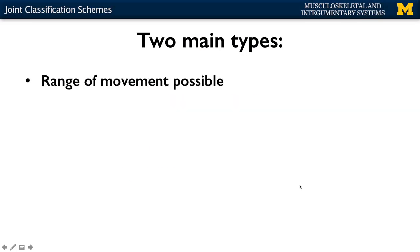Another way to think about the differences between joints is how much movement is allowed at the joint. There are three possibilities. The first is no movement whatsoever. You're going to find these in synchondroses, in epiphyseal plates, and in the sutures of the skull — no movement is allowed there, unless something is wrong.